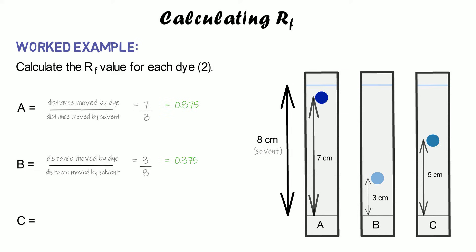For dye B, the distance moved by the dye is three centimetres and the solvent is still eight centimetres, so three divided by eight gives 0.375. For dye C, the dye moved five centimetres and the solvent moved eight, so five divided by eight gives 0.625. All values are less than one, which is perfect — one mark for working and one for the correct answer.